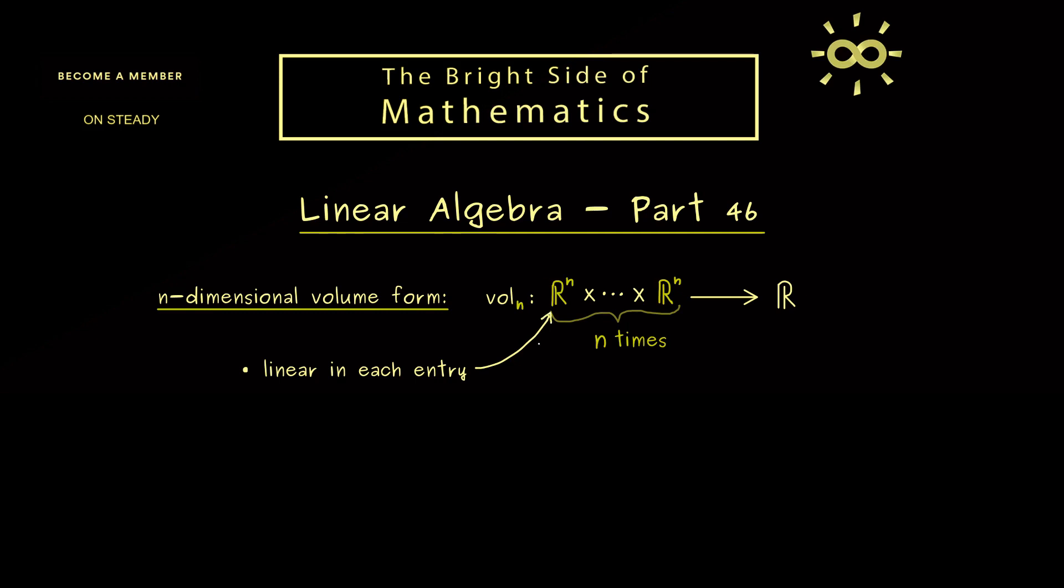For example, we have said it should be linear in each entry. In addition, it should also be anti-symmetric, which means if you exchange two entries we change the sign of the outcome. And finally, we normalize the function by saying that the n-dimensional volume of the unit cube should be 1.